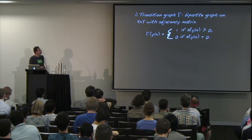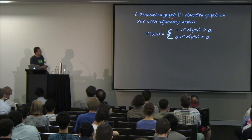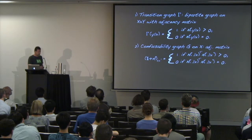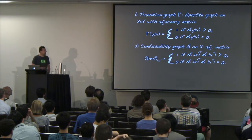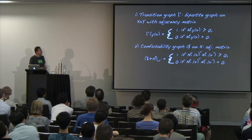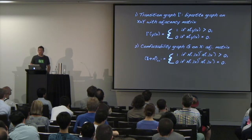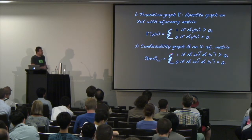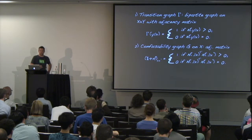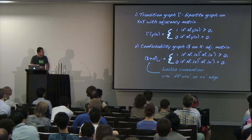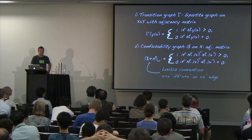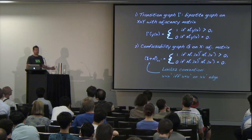This motivates two combinatorial objects. The first, the transition graph, records which transitions are possible — it's a bipartite graph between input and output alphabets, with a one in the adjacency matrix if the channel probability is positive, zero otherwise. The confusability graph is an undirected graph on the input symbols; two symbols are confusable if there is a possibility they lead to the same output symbol. Every symbol is confusable with itself — this is the Lovász convention — so the confusability relation is either equality or adjacency by an edge in the graph.